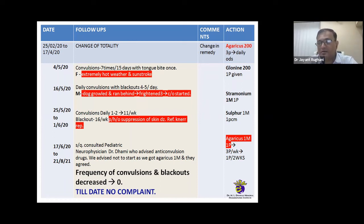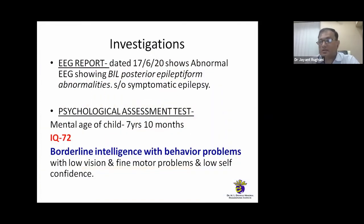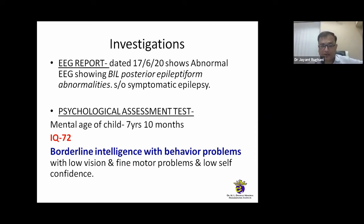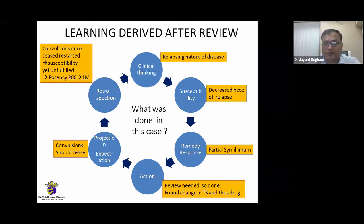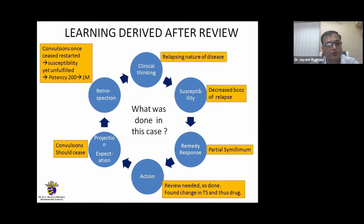This is why the topic of this case is susceptibility analysis. EEG carried out on 17th June 2020 showed bilateral posterior epileptiform abnormalities. Psychological assessment: mental age of the child was 7 years and 10 months and IQ was 72 — borderline intelligence. Learning derived from review: the relapsing nature of the disease reflected clinical thinking and susceptibility decrease; remedy response was partial with Opium, which is why the relapse recurred and Agaricus was needed. The review found the change in totality and change in drug, and with Agaricus 1M convulsions have ceased completely.